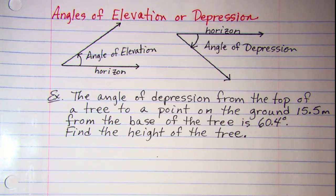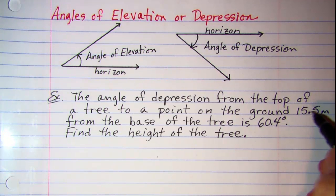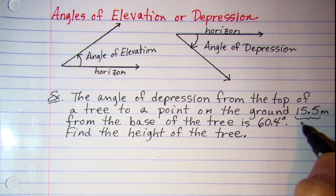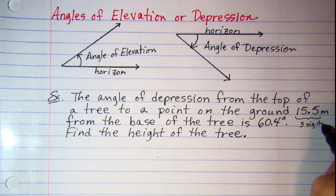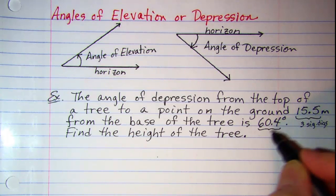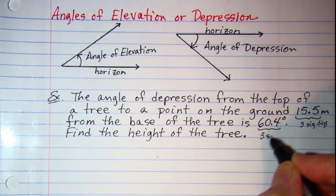Now before I draw a sketch, let's look at our significant digits. We see that this measurement has three significant digits, and this angle of depression also has three significant digits.